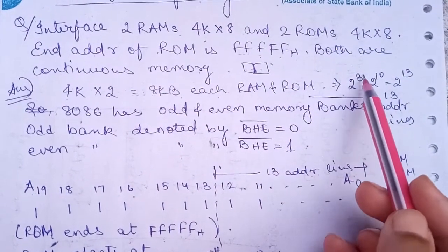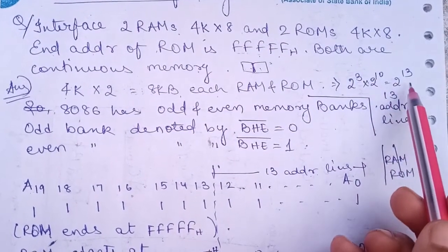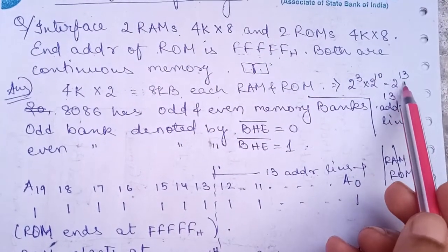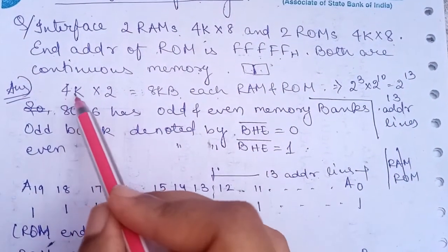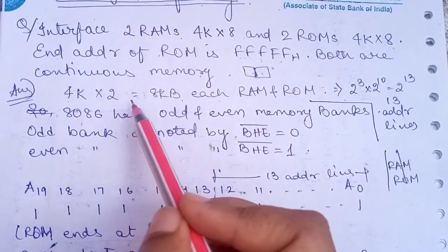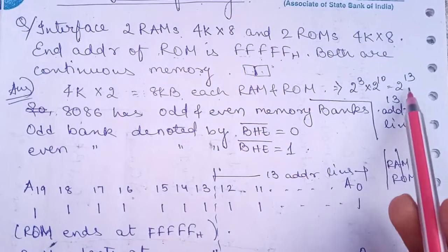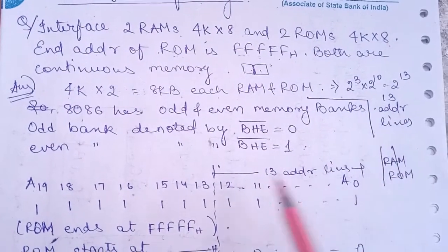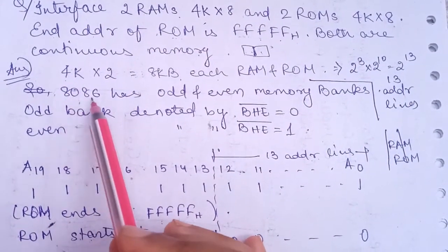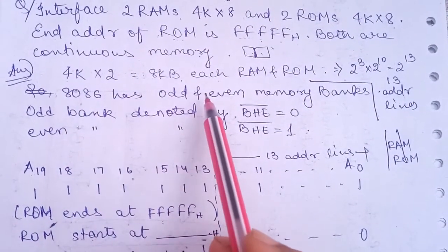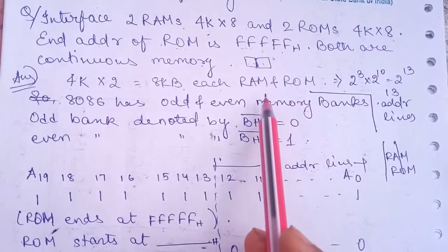For 8KB, we need 2 to the power 13, so 13 address lines will be used. For either the RAM or ROM, 13 address lines will be used. The 8086 uses odd and even memory banks.